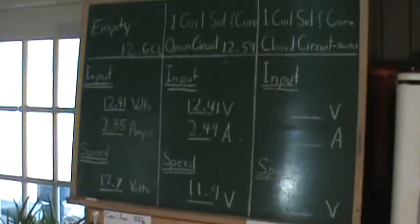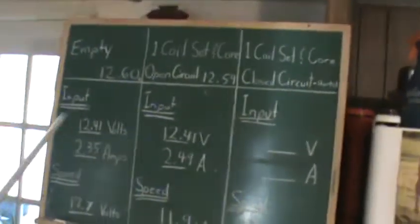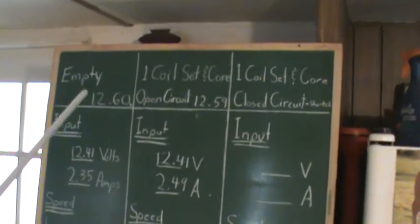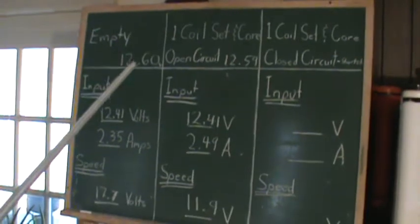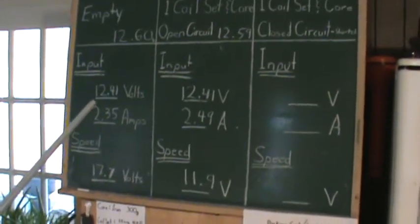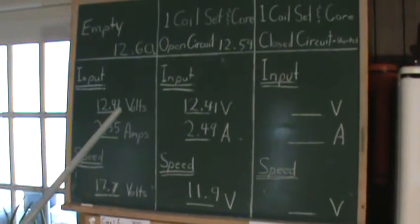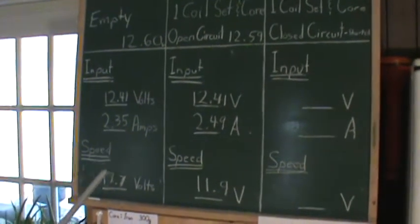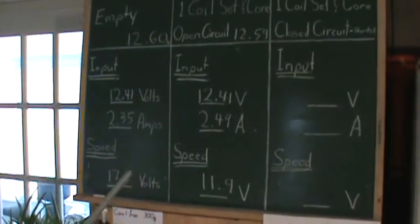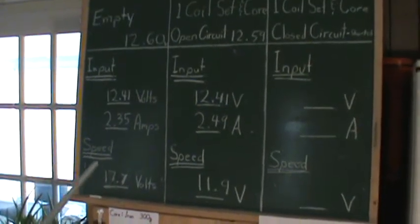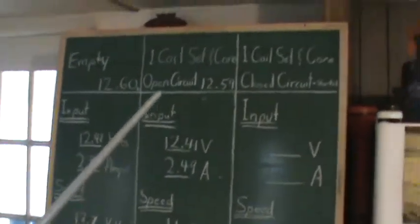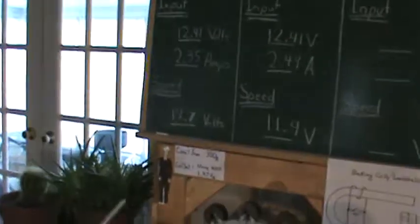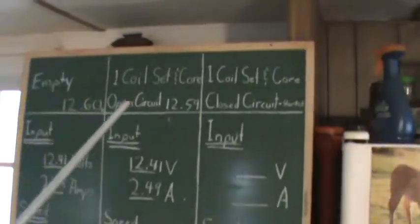Let me try and adjust the glares here. The first test was with an empty wheel. Starting at 12.6 volts on the battery. Well rested. After it settled at its steady speed, we had 12.41 volts on the battery. 2.35 amps input to the motor. And 17.7 volts on the small pickup coil showing the speed in volts. So now this second test. We had one coil set on there. And the specs were here. We gave them. One and a half kilograms basically.